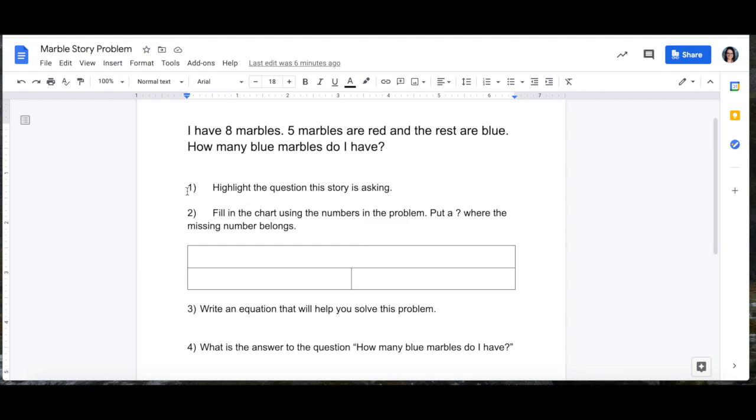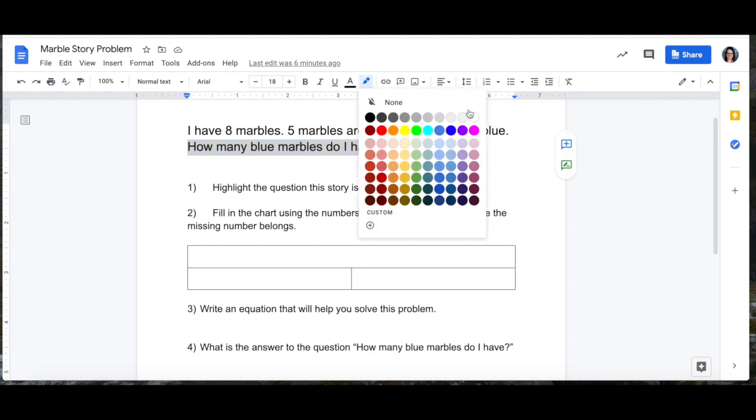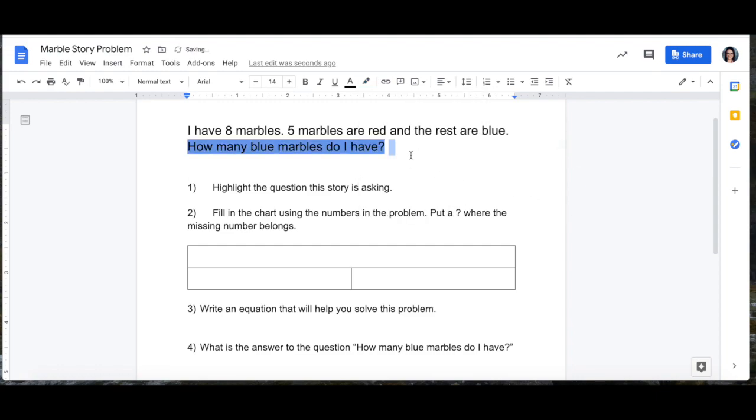Step one is highlight the question the story is asking. To highlight something in a Google Doc, you take your mouse and drag across it. Then you can use this tool right here. It looks like a little marker and you pick a color to do as the background. Like you could have a blue highlight or you could have orange. Whatever makes you happy.